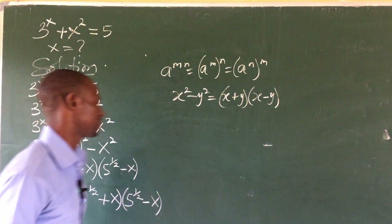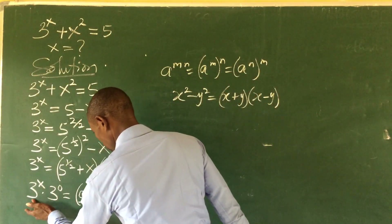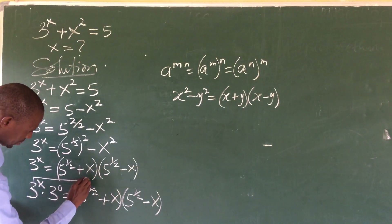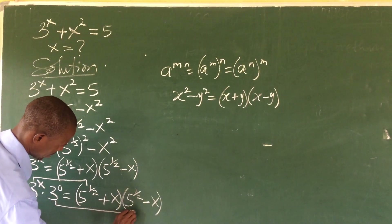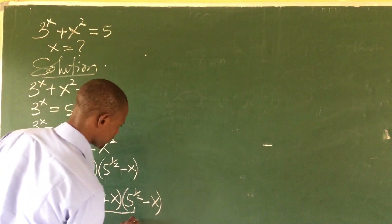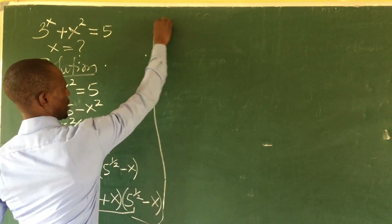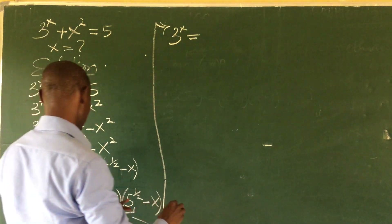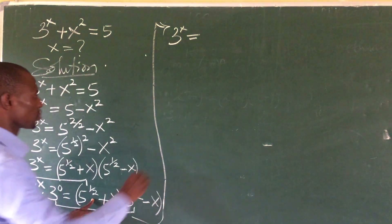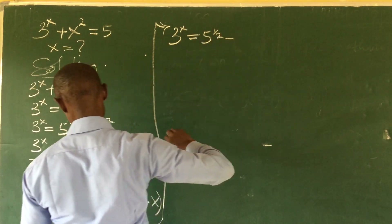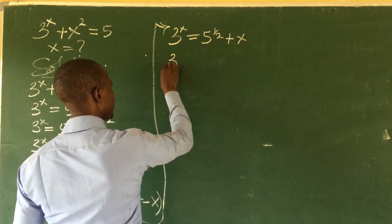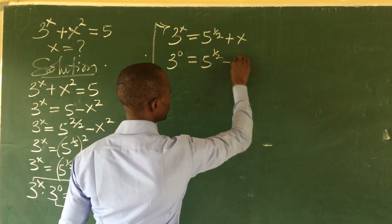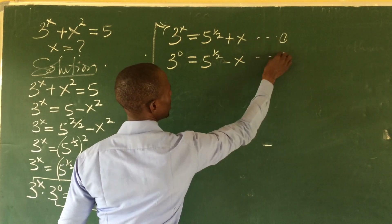We now equate the corresponding factors. We take 3^x equal to 5^(1/2) + x — that is equation 1. And 3^0 equal to 5^(1/2) - x — that is equation 2.